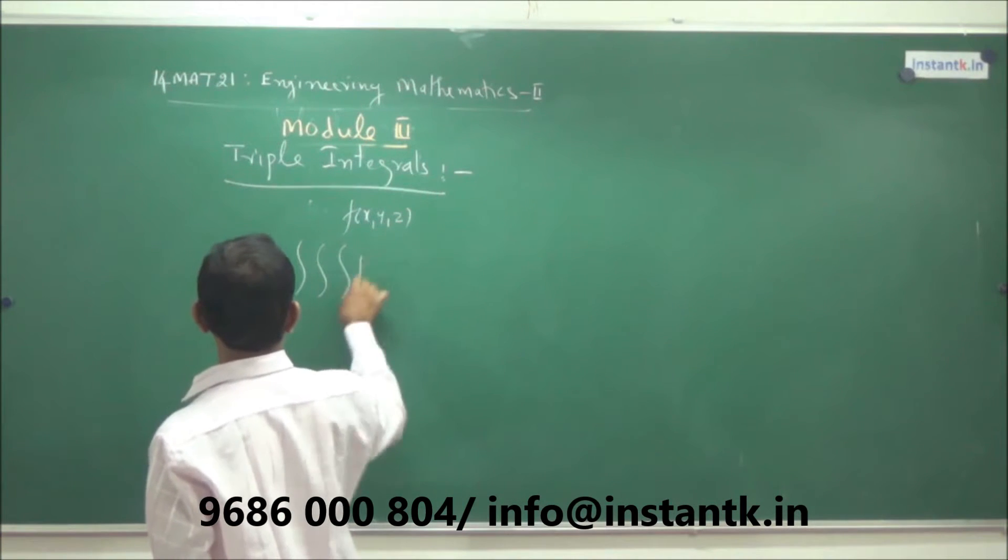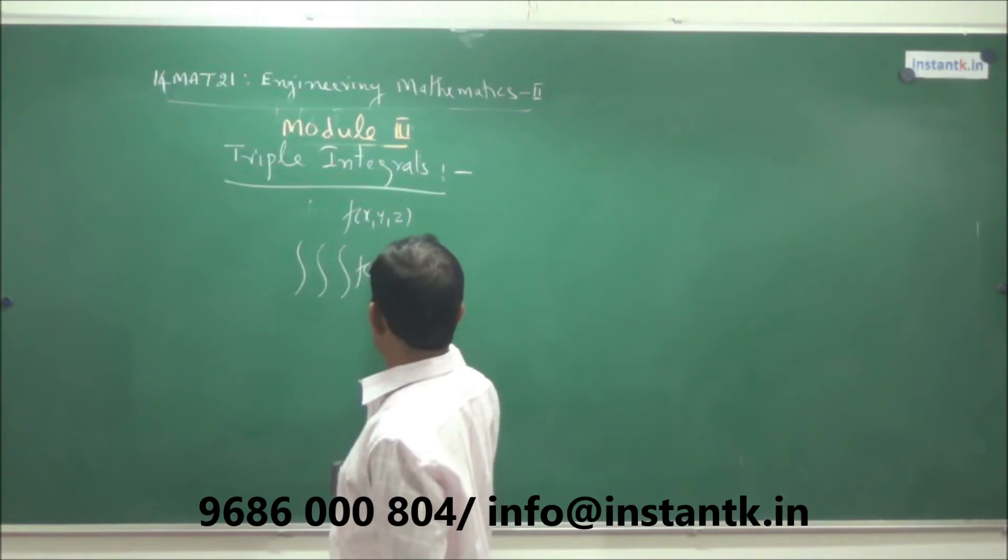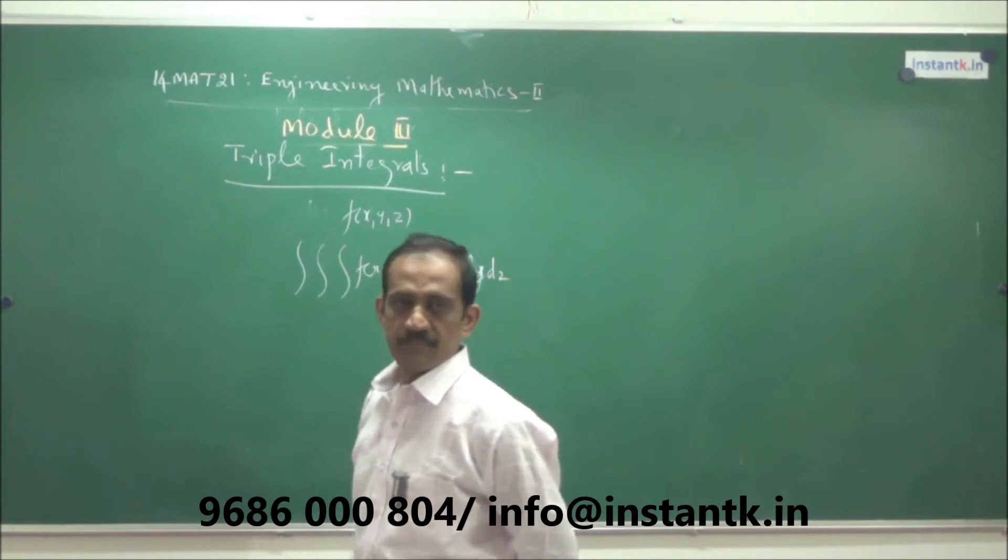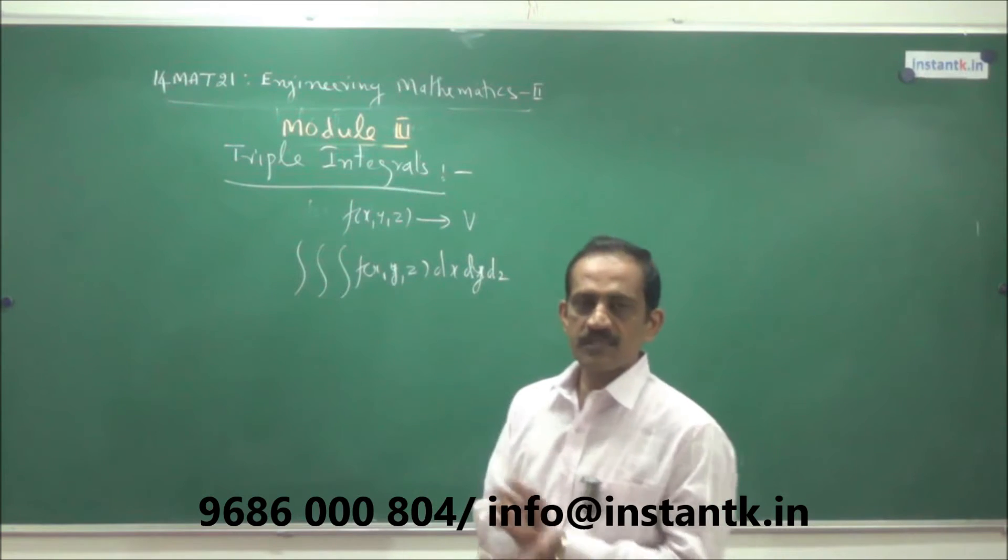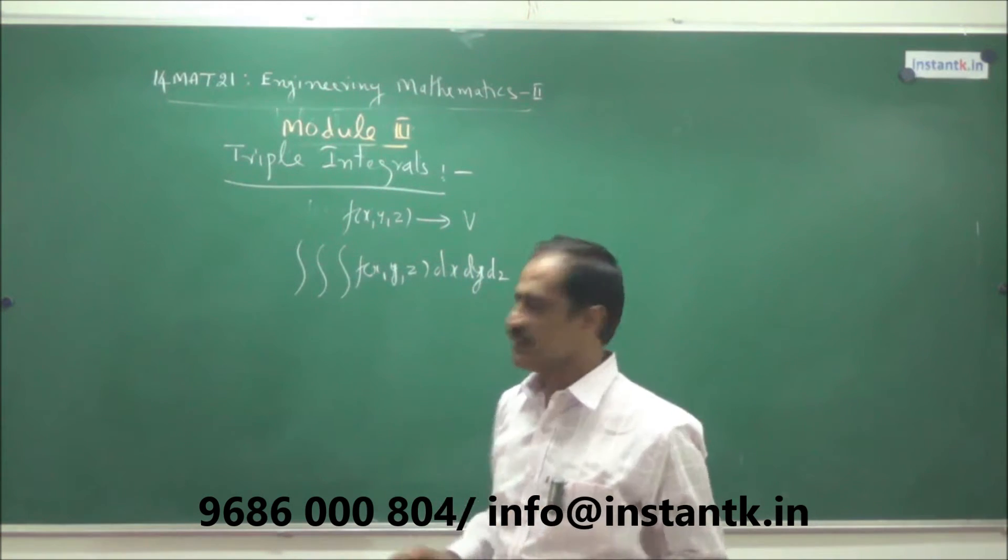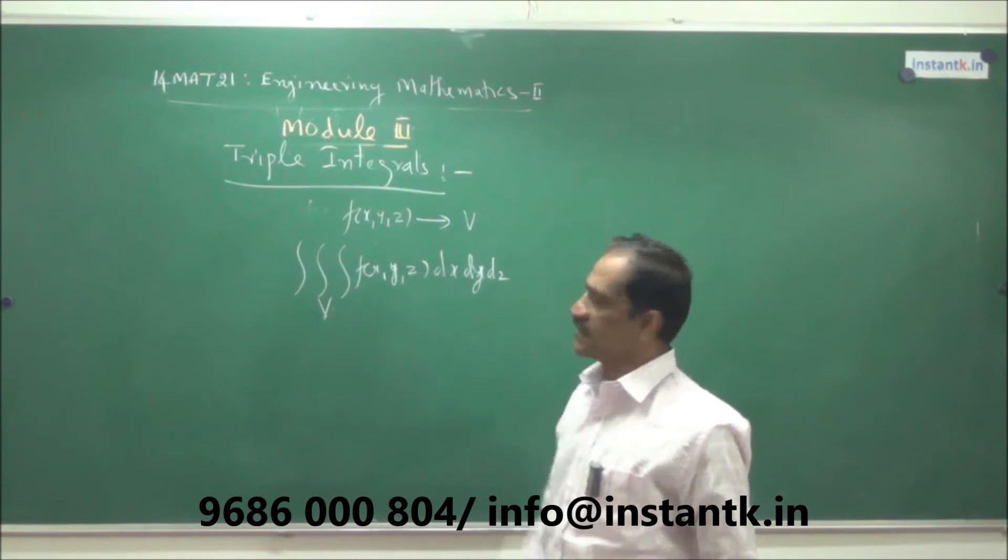Triple integral is usually denoted by symbol triple integral f of x, y, z with respect to x, y, and z over the given region. This function may be defined in the region that will be v, because in three dimensional we shall call it as v. In the volume it is defined. In this region v, we have to evaluate this triple integral.